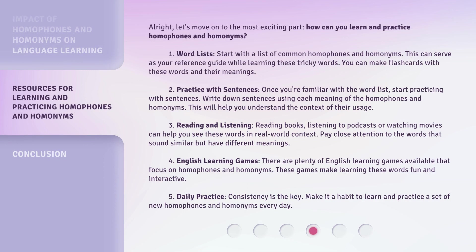Let's move on to the most exciting part: how can you learn and practice homophones and homonyms? First, Word Lists — start with a list of common homophones and homonyms. This can serve as your reference guide while learning these tricky words, and you can make flashcards with these words and their meanings. Second, Practice with Sentences — once you're familiar with the word list, start practicing with sentences. Write down sentences using each meaning of the homophones and homonyms; this will help you understand the context of their usage.